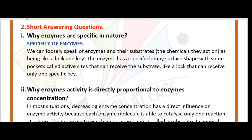Short answer question number one: Why are enzymes specific in nature? We can loosely speak of enzymes and their substrates — the chemicals they act on — as being like a lock and key. The enzyme has a specific lumpy surface shape with some pockets called active sites that can receive the substrate, like a lock that can receive only one specific key. This is why the nature of enzymes is specific.